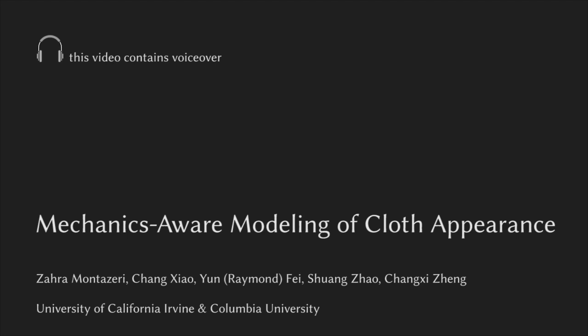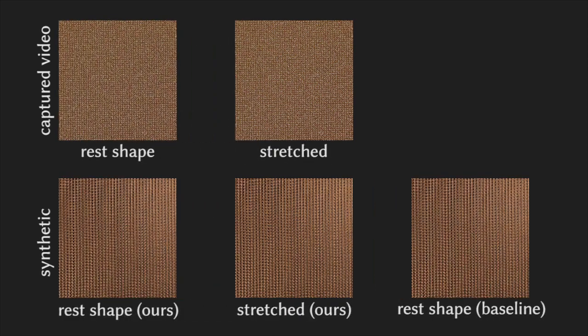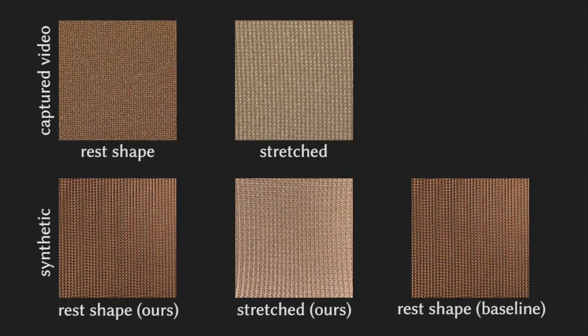In the real world, cloth appearance can change drastically due to the mechanical reactions of constituent yarns and fibers. In this example, the cloth changes its color and shininess due to a simple stretching.